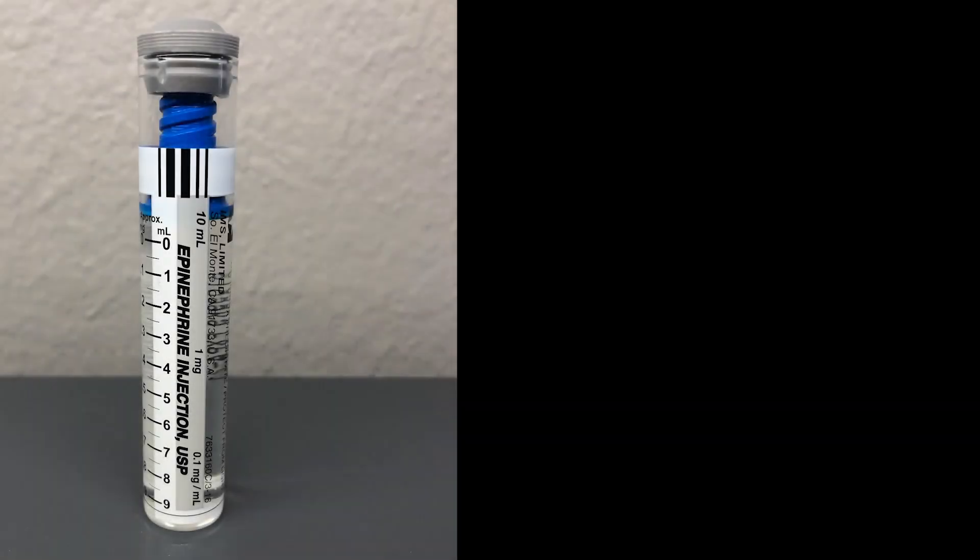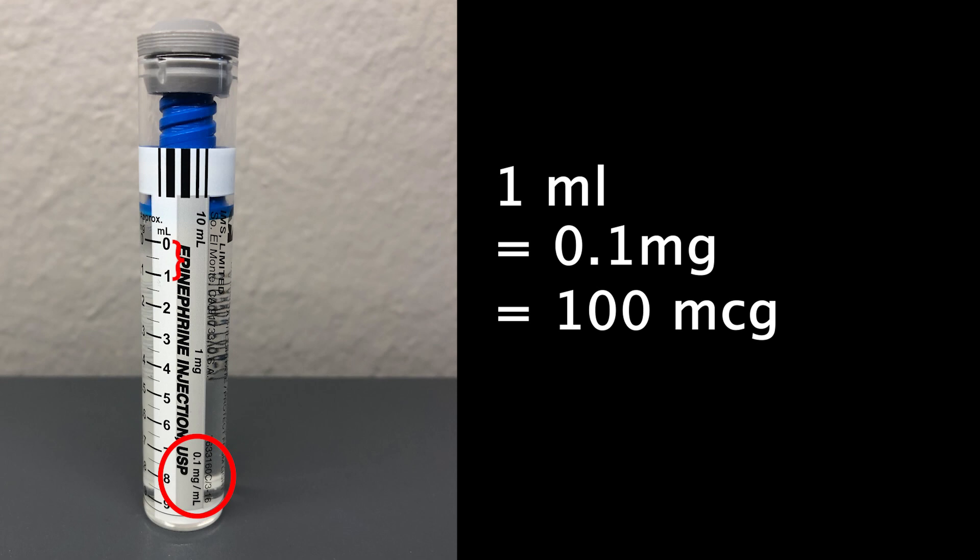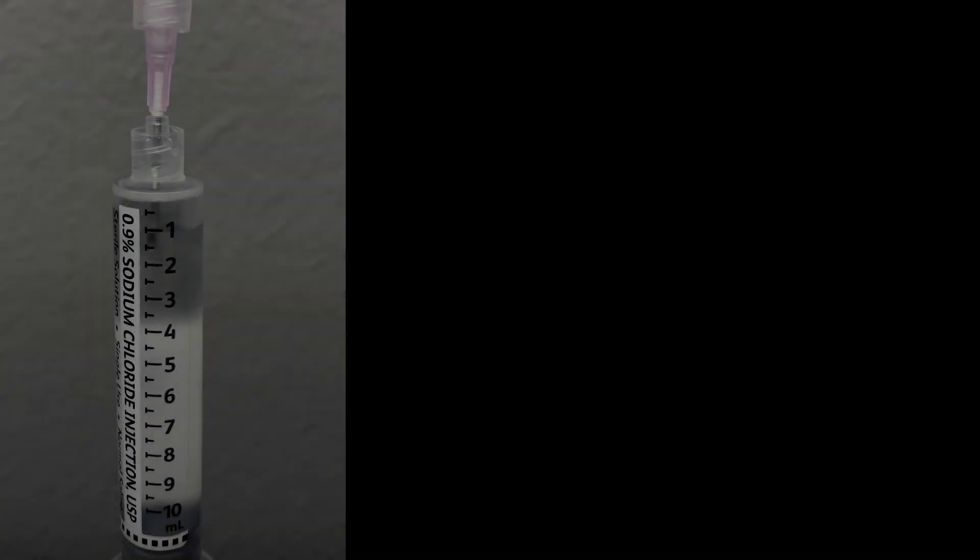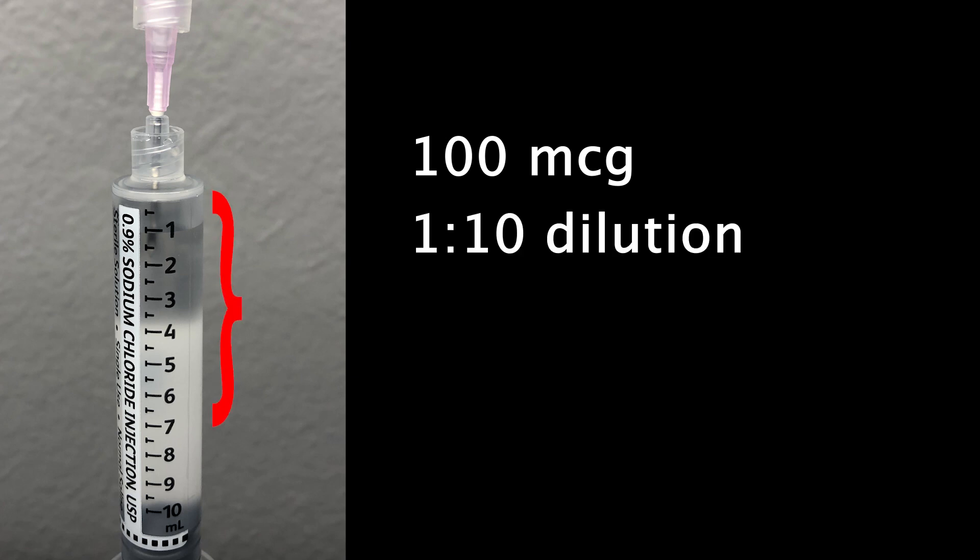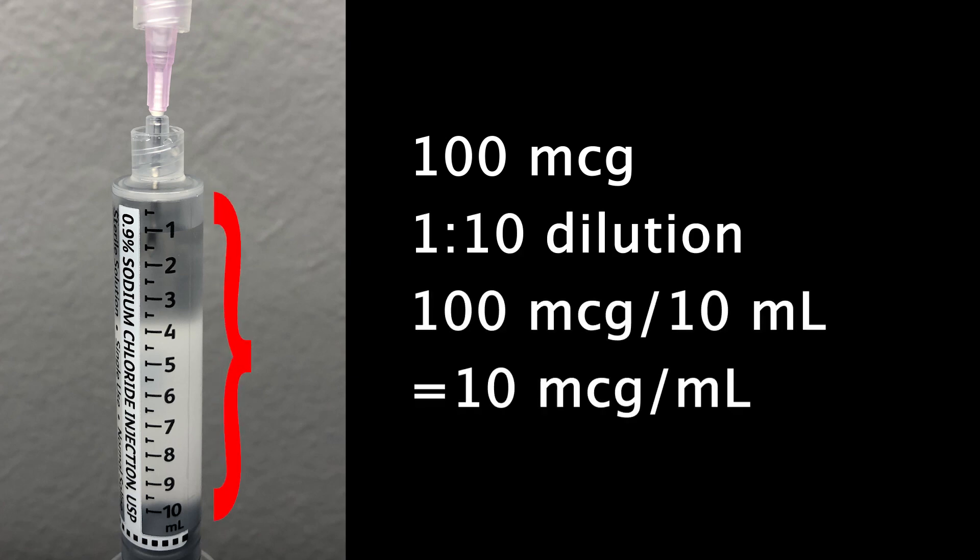One amp of epinephrine contains one milligram or 1,000 micrograms. So we've just put 100 micrograms into our flush. We're diluting that 100 micrograms one to 10. So the solution in the syringe is now 10 micrograms per milliliter.